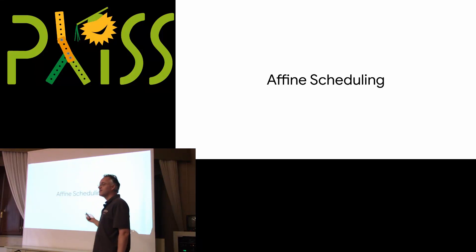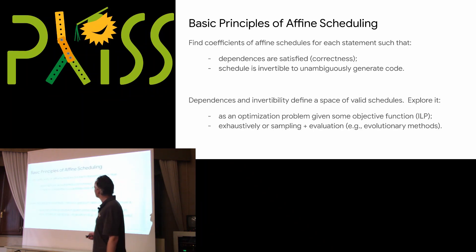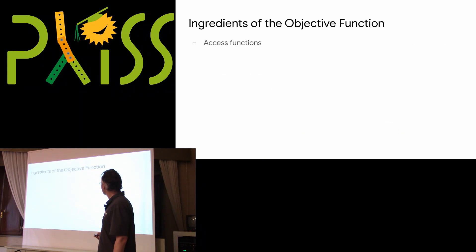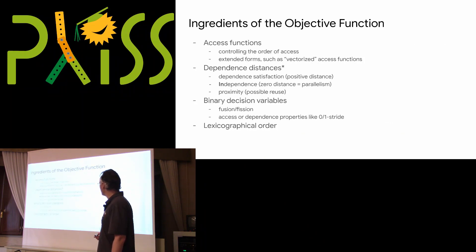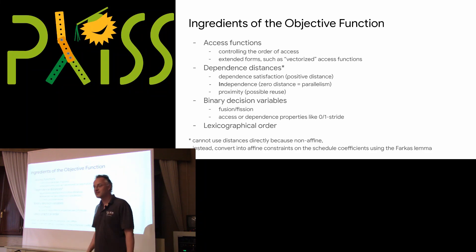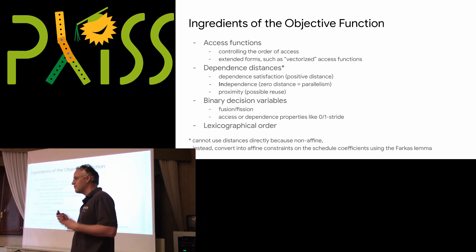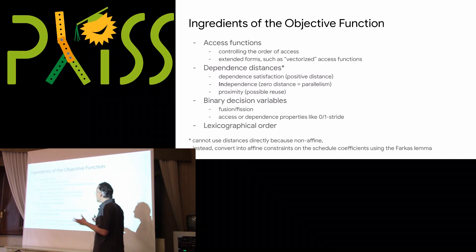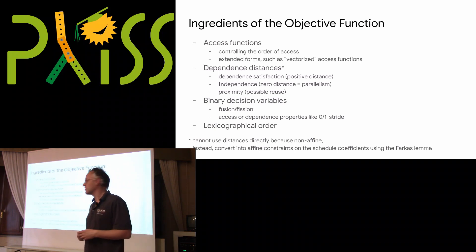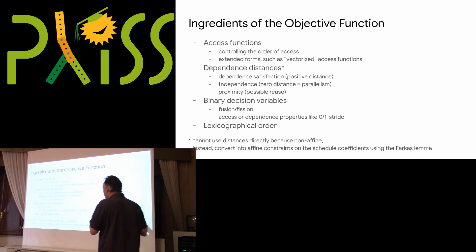I don't have time to zoom in on the algorithms about the precise heuristics to build a fine schedule. There are plenty of slides about that, essentially about objective functions — how you actually build optimization problems to figure out the right composition of tiling, fusion, shifting, pipelining, etc. Many of these problems can be reduced to linear objective functions using the FACAS lemma I mentioned yesterday.